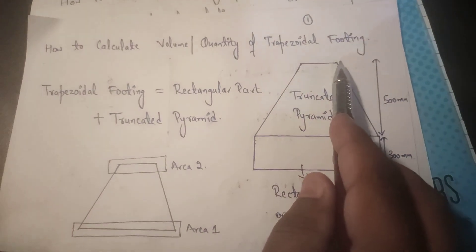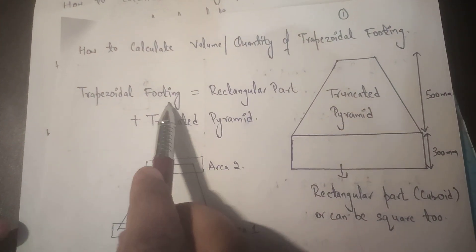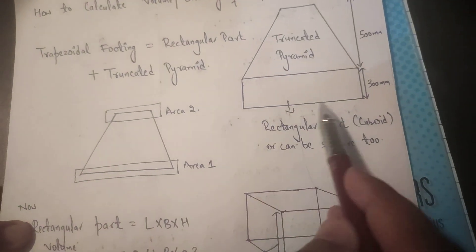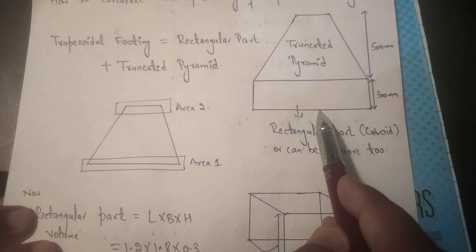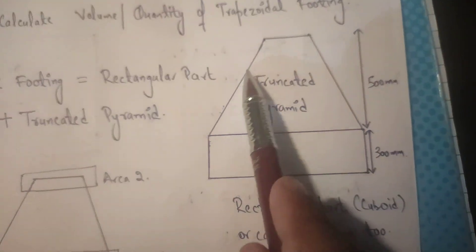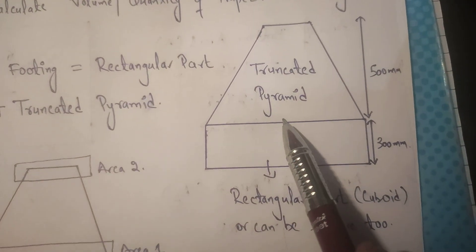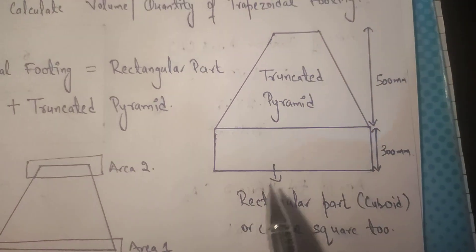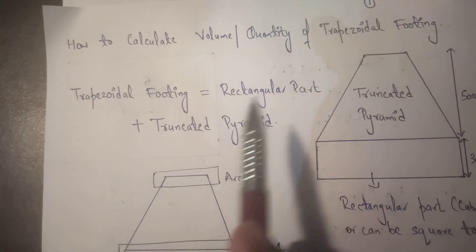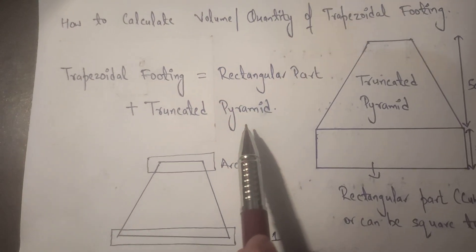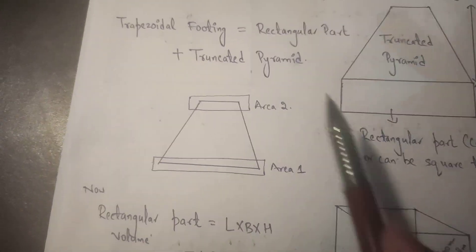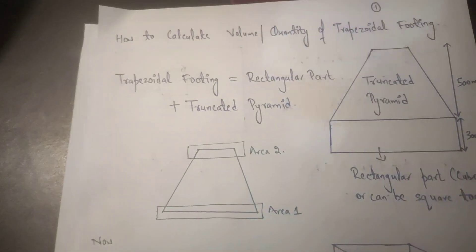Today we will talk about trapezoidal footing. As you can see in the figure, it consists of a rectangular part at the bottom and a portion in the shape of a trapezoid — that is known as a truncated pyramid. So trapezoidal footing volume equals the rectangular part plus the truncated pyramid.